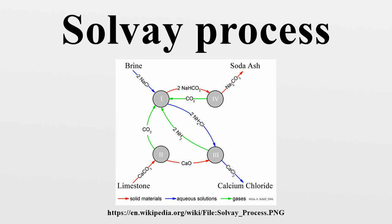The word soda originally referred to certain plants that grow in salt marshes. It was discovered that the ashes of these plants yielded the useful alkali soda ash. The cultivation of such plants reached a particularly high state of development in the 18th century in Spain, where the plants are named barilla. The ashes of kelp also yield soda ash, and were the basis of an enormous 18th century industry in Scotland. Alkali was also mined from dry lake beds in Egypt.